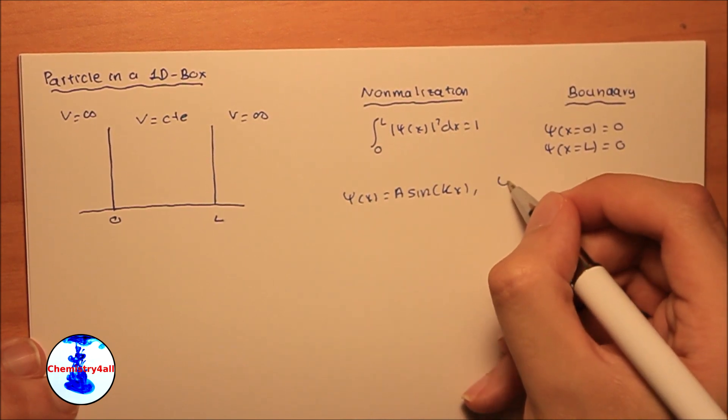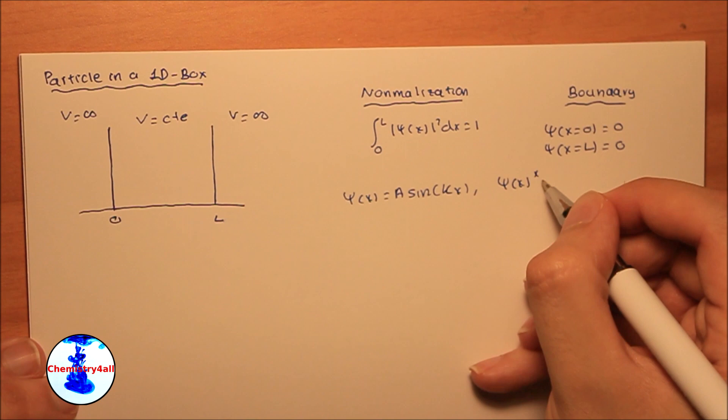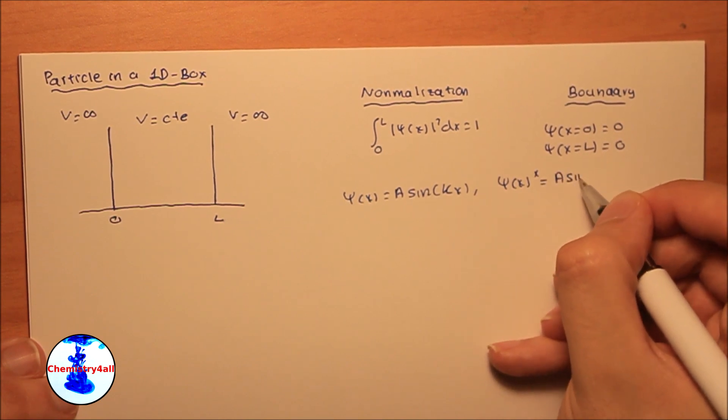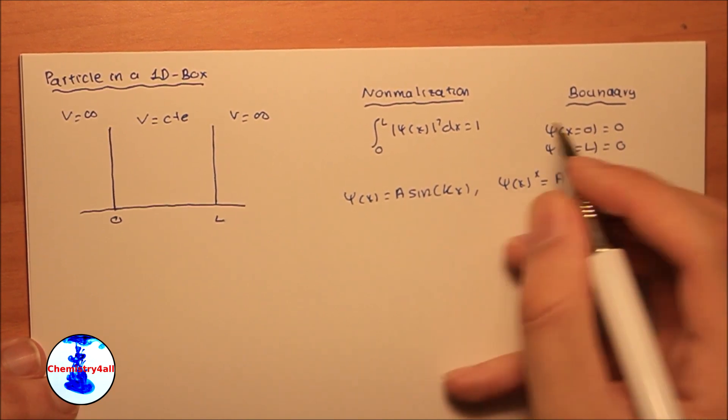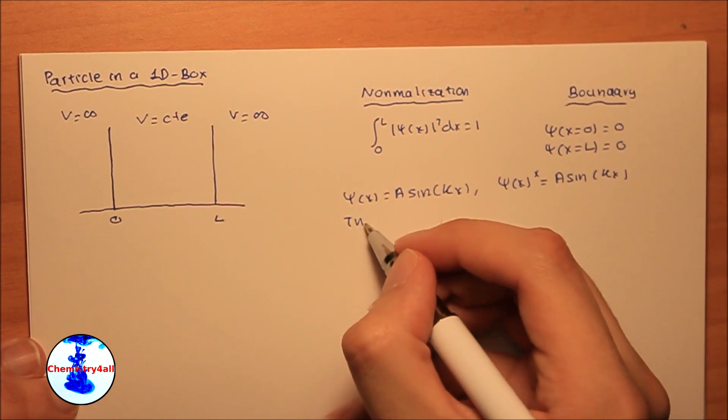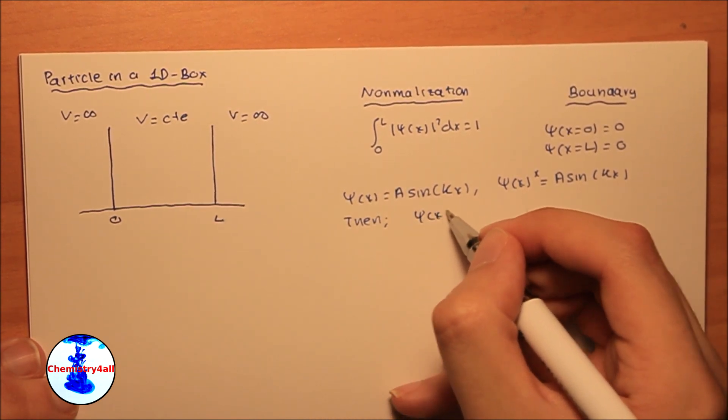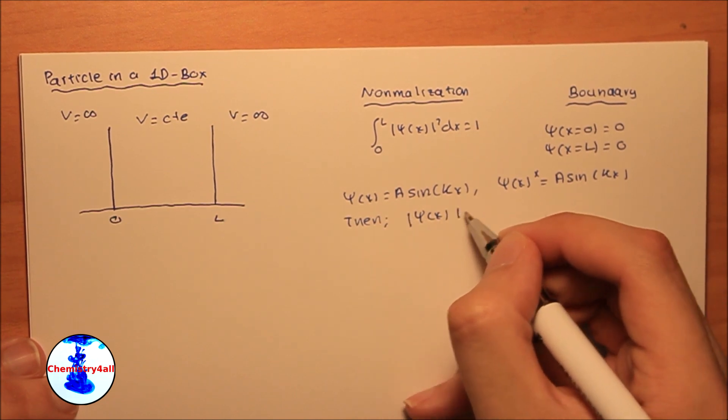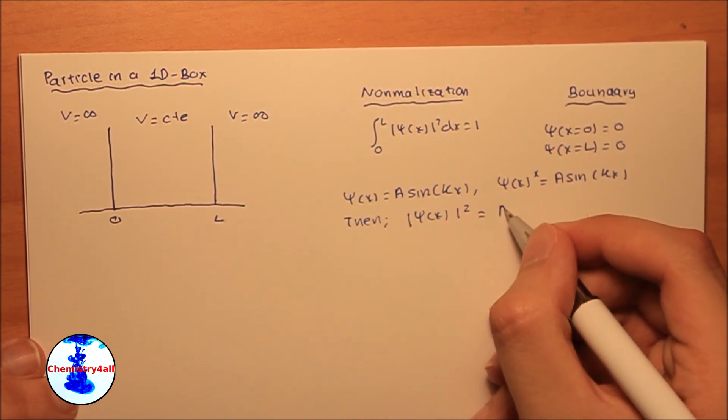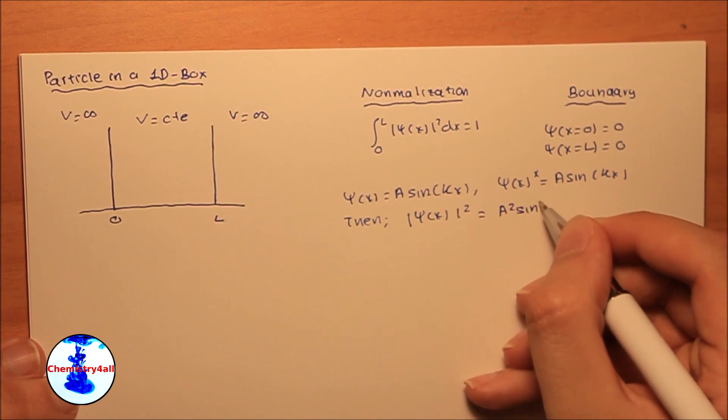By the way, the wave function is just what contains all the information about our system. For this problem we could give a general sinusoidal wave function. And now we can express the probability density as the product of the wave function and its complex conjugate.